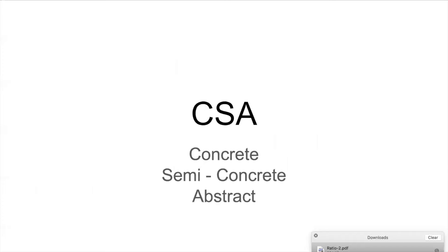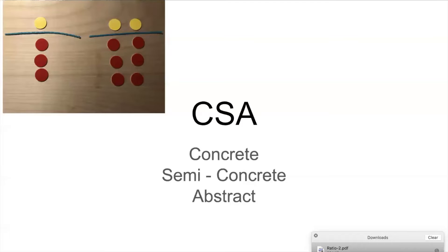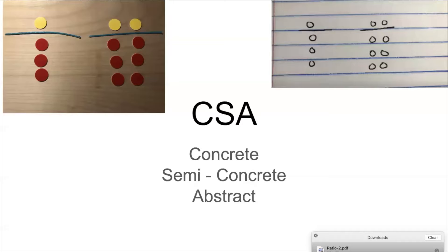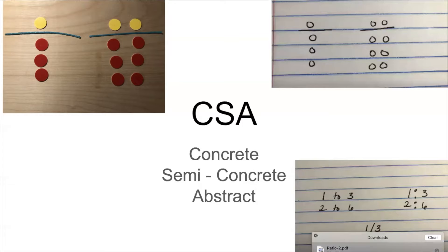The next thing is the CSA model. We want to use the CSA model from kindergarten through 12th grade. Kids need hands on manipulatives to demonstrate through concrete, then move to semi-concrete, then abstract — or do them together coherently. So maybe I'm doing concrete but also drawing what I'm actually building. The concrete model uses manipulatives. The semi-concrete is when I draw that same image. The abstract is when I move to just the symbol.